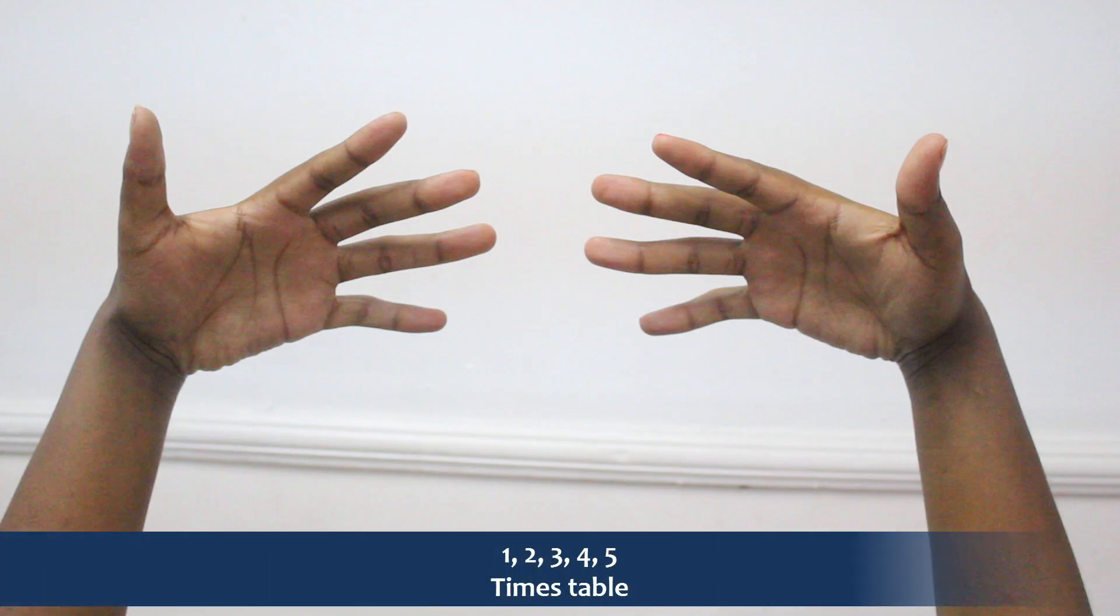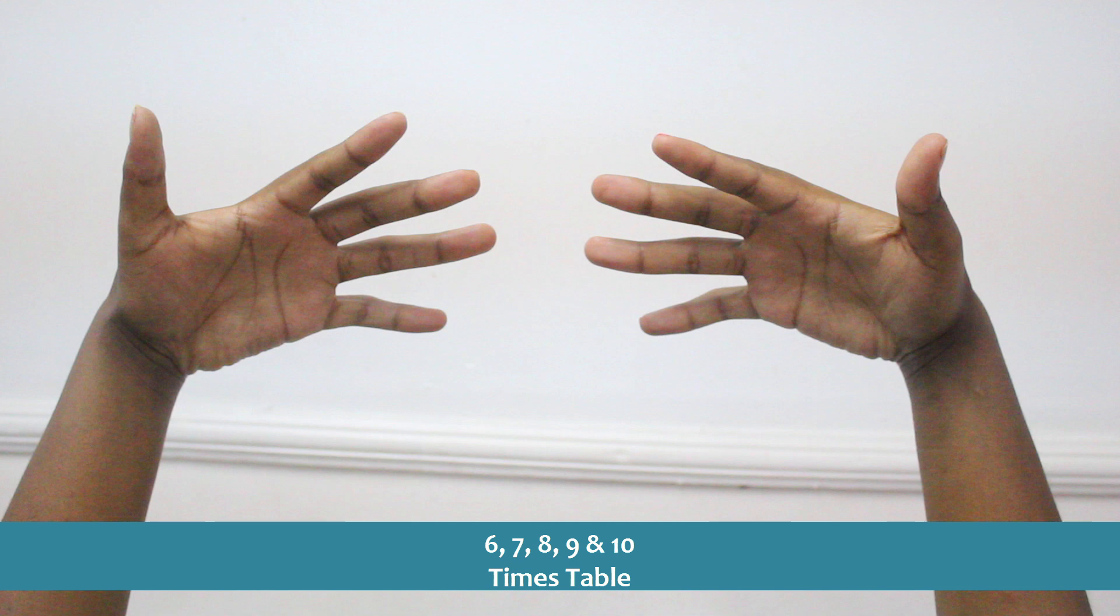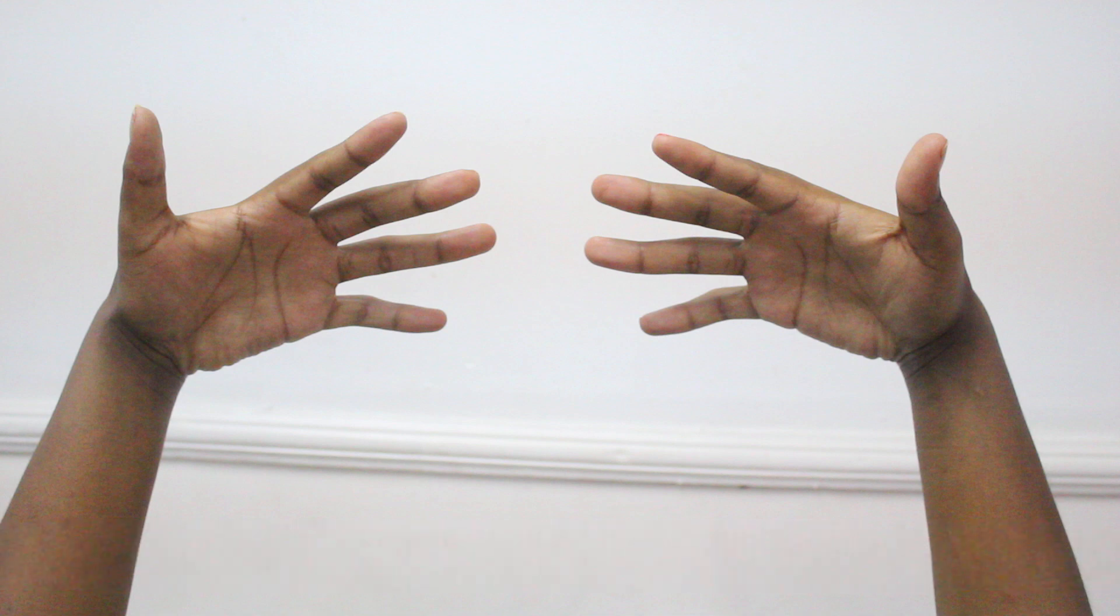Most learners cope well with 1, 2, 3, 4, and 5 times tables, unlike the 6, 7, 8, 9, and 10 times tables. Let me show you how the 6, 7, 8, 9, and 10 times tables work.